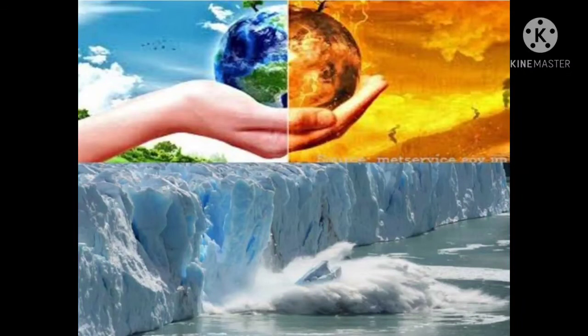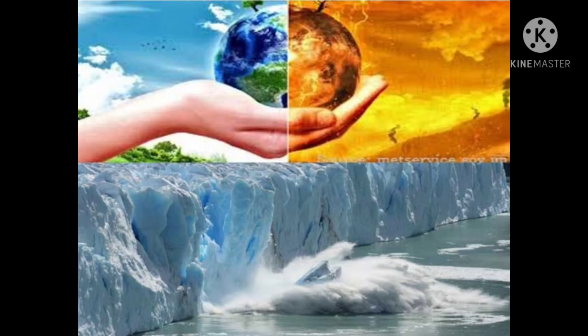Now we'll understand the concept of global warming. Global warming can be defined as an increase in the temperature of the earth due to an increase in greenhouse gases in the atmosphere. If the percentage of greenhouse gases increases in the atmosphere, the global temperature will also rise. It is a gradual increase in the temperature of the earth due to increase in greenhouse gases. The balance between the heat received from the sun and that given out by the earth was maintained by nature for thousands of years.